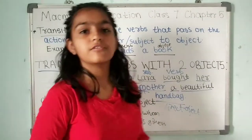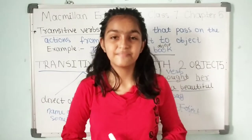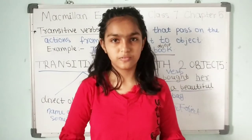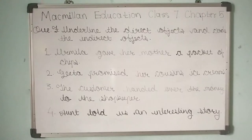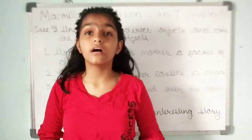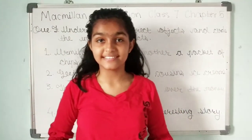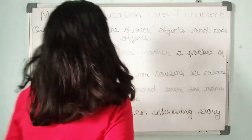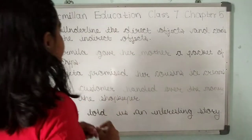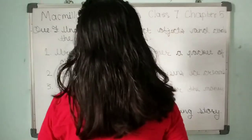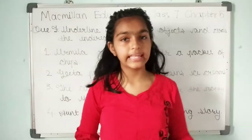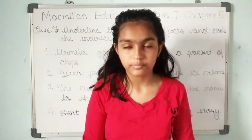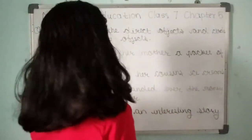Now we will move on to Exercise F. The question says: underline the direct object and circle the indirect object. We have discussed direct objects and indirect objects, so let's quickly start the exercise.